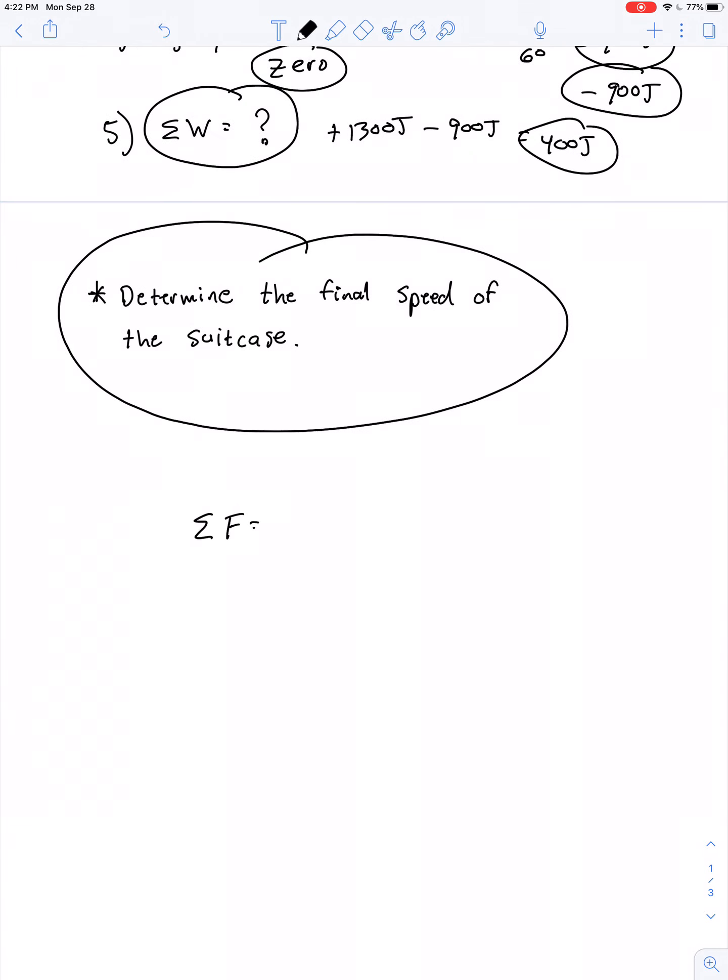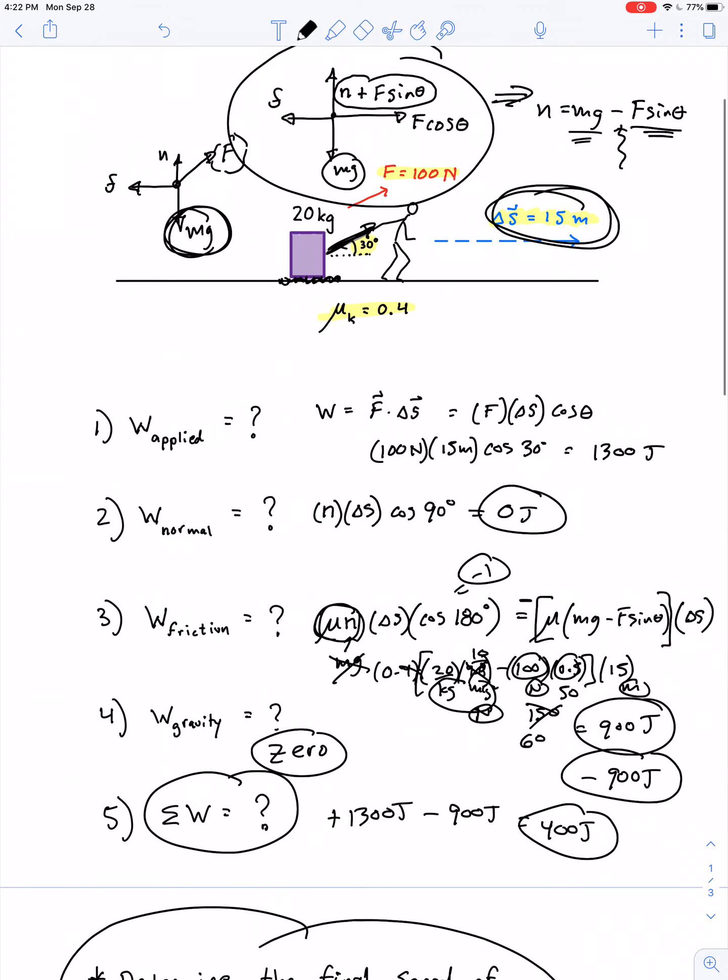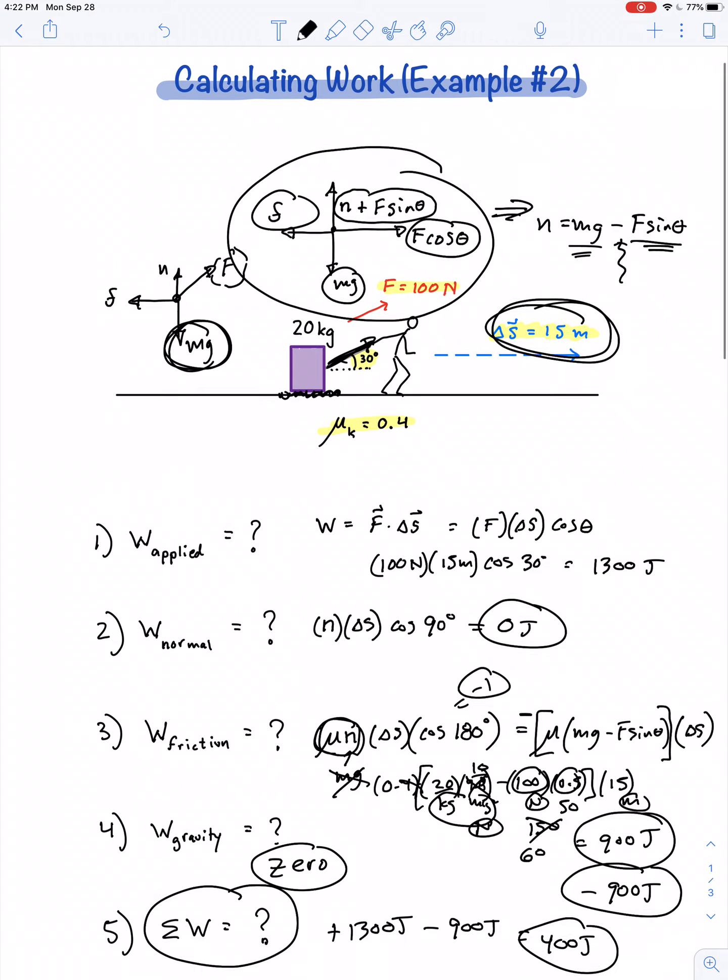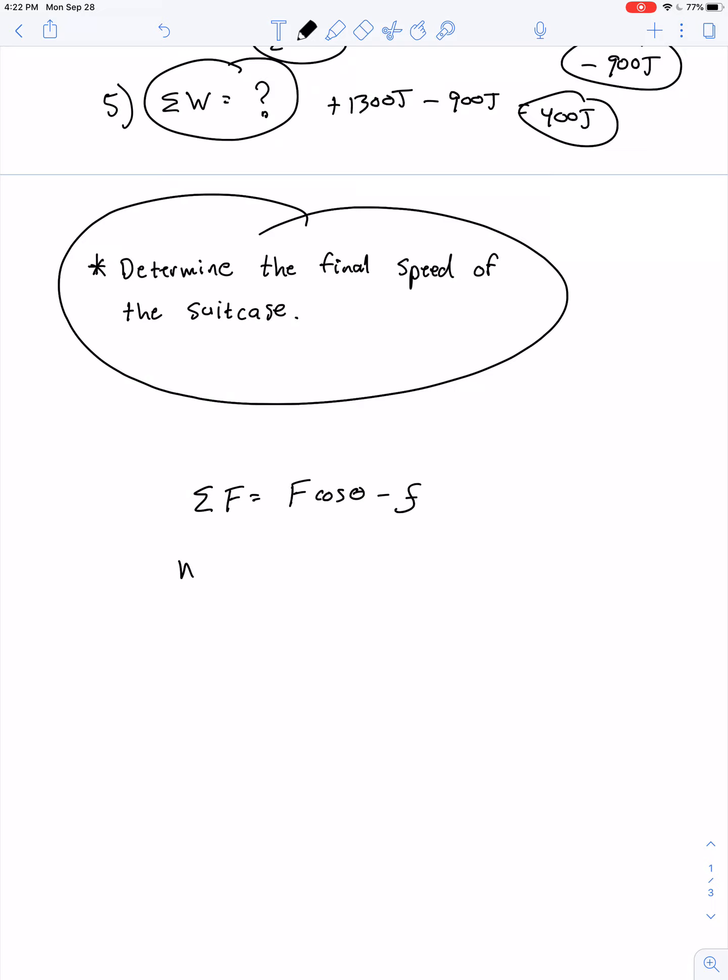It looks like the net force is F cosine theta minus the force of friction. F cosine theta is in the direction of the acceleration. Friction is opposite the direction of the acceleration. So we can say MA is equal to F cosine theta minus mu N. But remember, N is mg minus F sine theta.